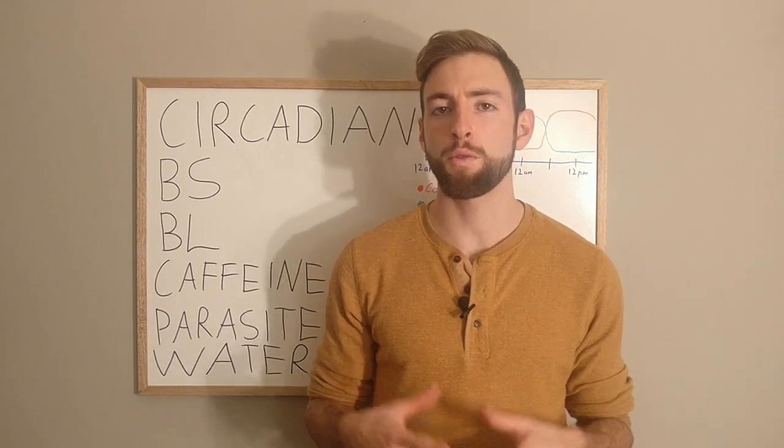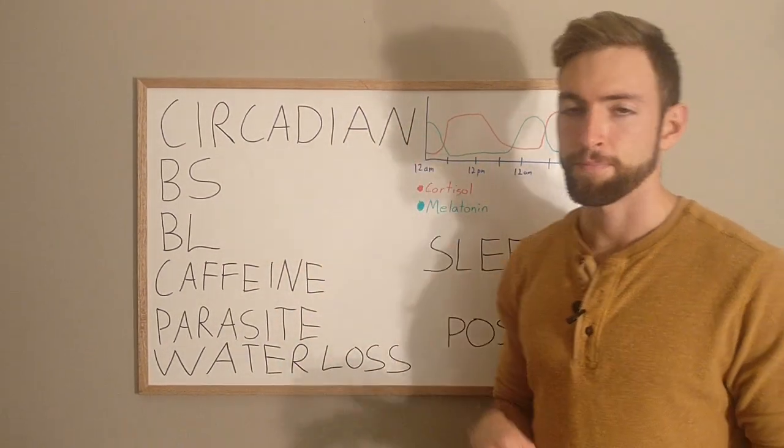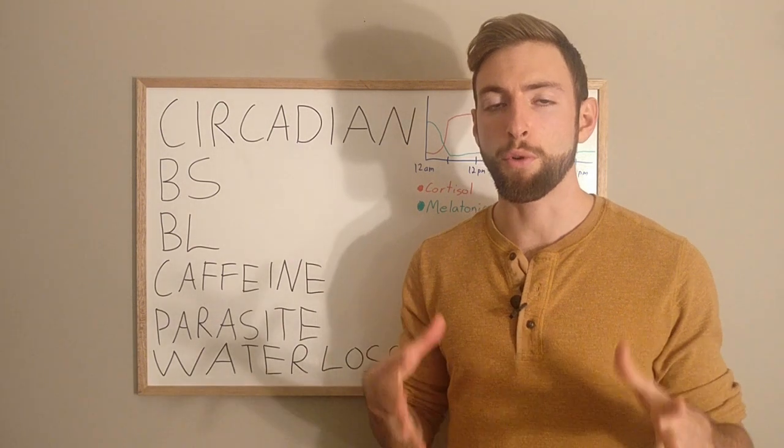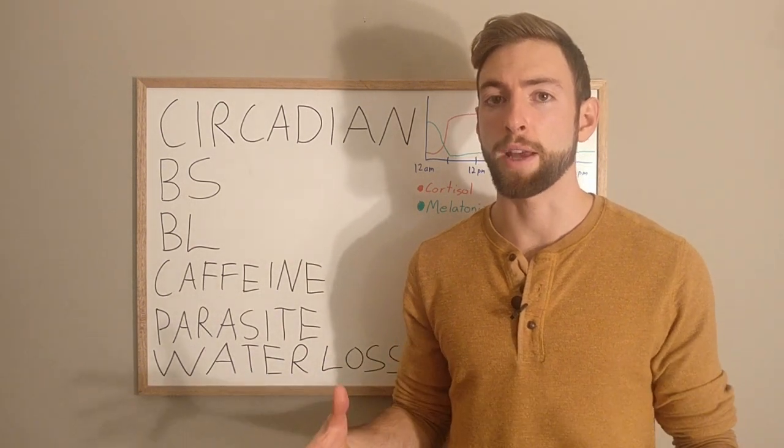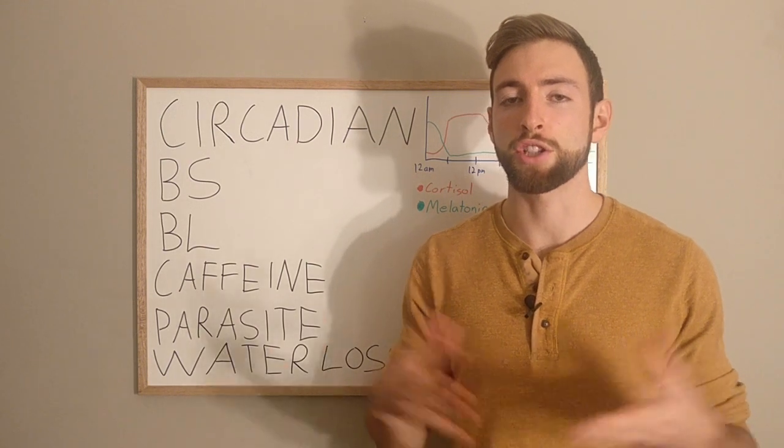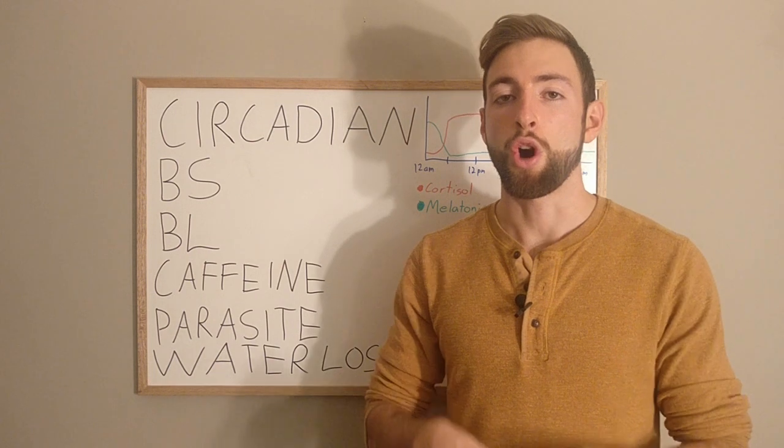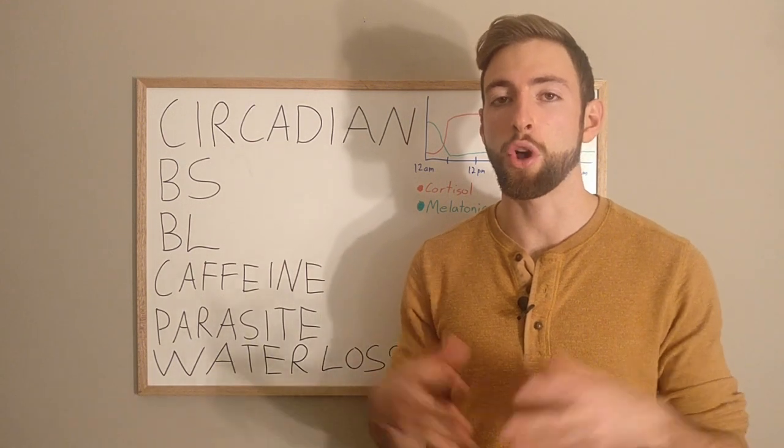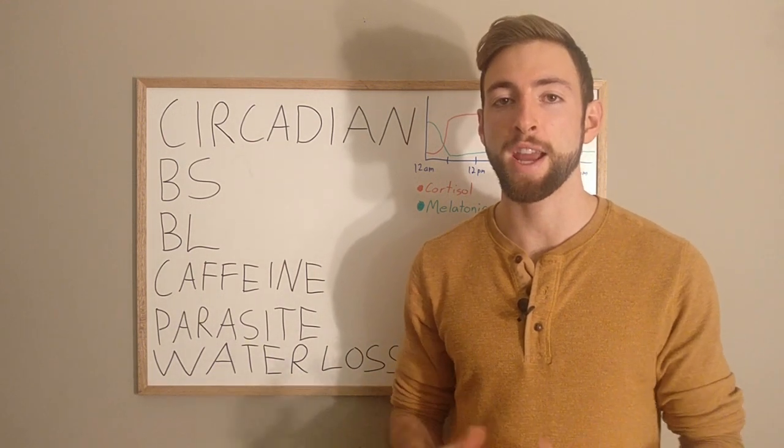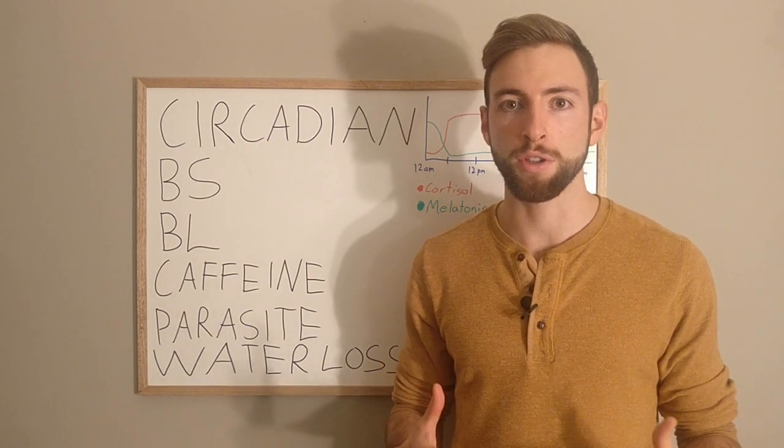The first thing that we need to understand is our circadian rhythm. Our circadian rhythm is the 24-hour clock that our body goes by. In normal, healthy individuals, it goes a certain way. In sick individuals, that gets disrupted. All of our cells get affected, all of our hormones get affected, our brain, our repair time gets affected.